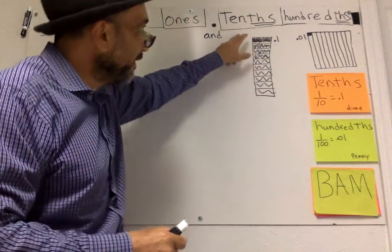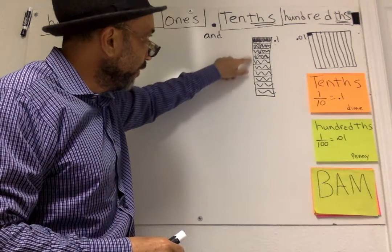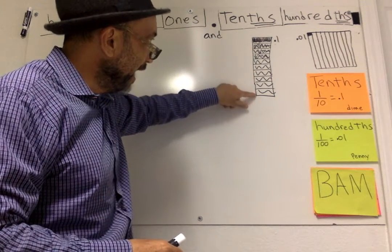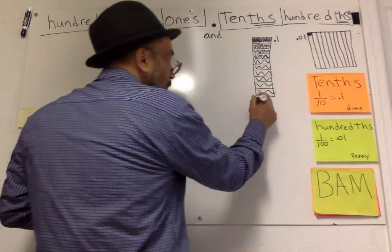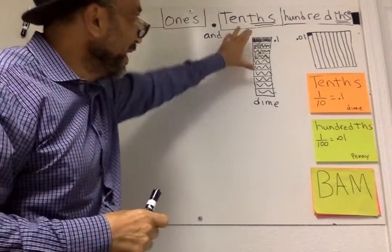So, for example, tenths is ten pennies. One, two, three, four, five, six, seven, eight, nine, ten. Right here, you have one dime. Because you have ten pennies, right? It's one tenth.